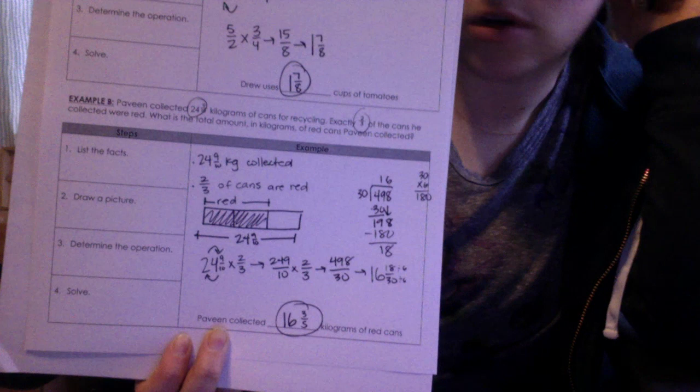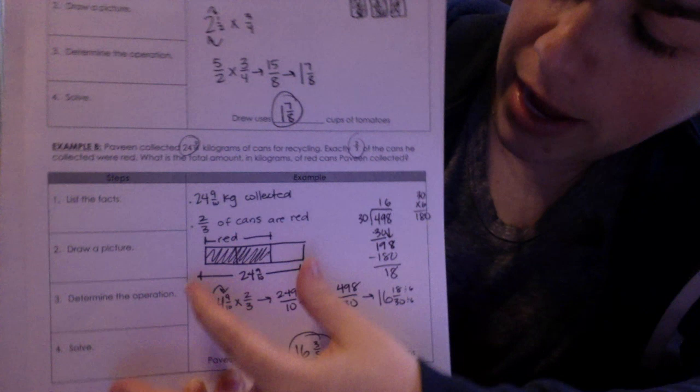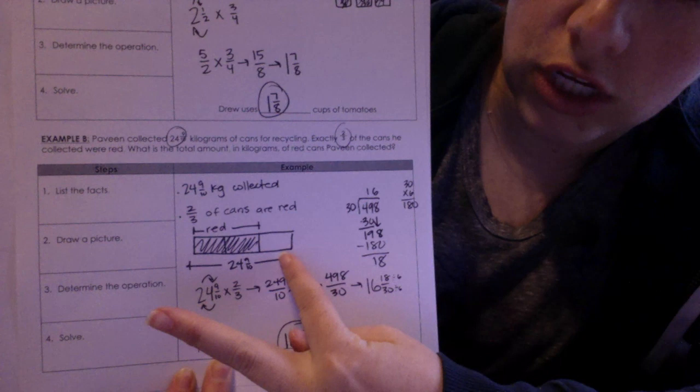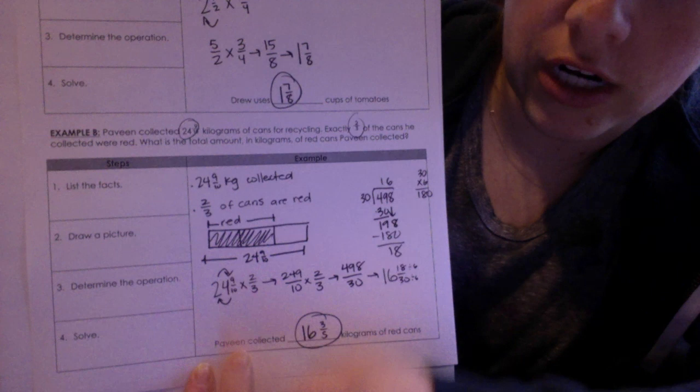So again, 2 numbers. I bulleted out 2 bullets, and I listed them out. When I did that, I said to myself, okay, I know the total is 24 and 9 tenths, and I know that if I split 24 and 9 tenths into 3 equal groups, 2 of those groups is going to make up 2 thirds.